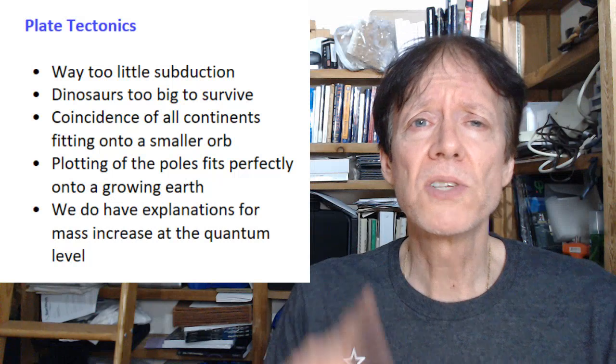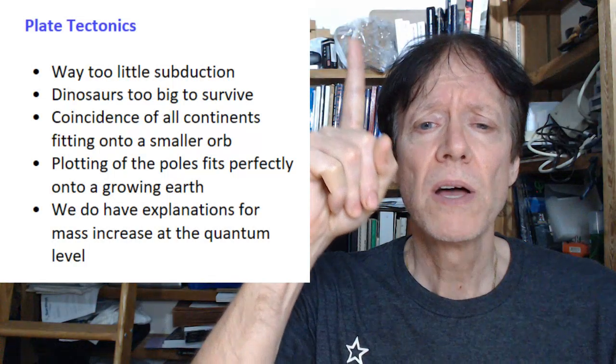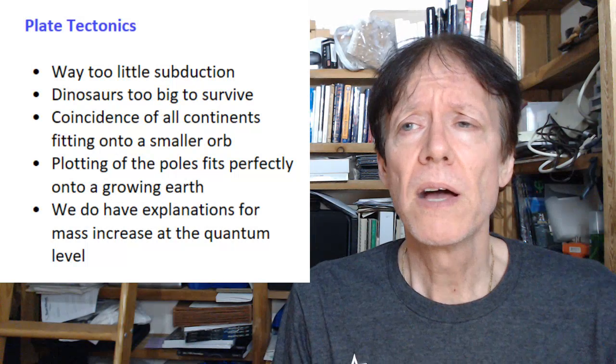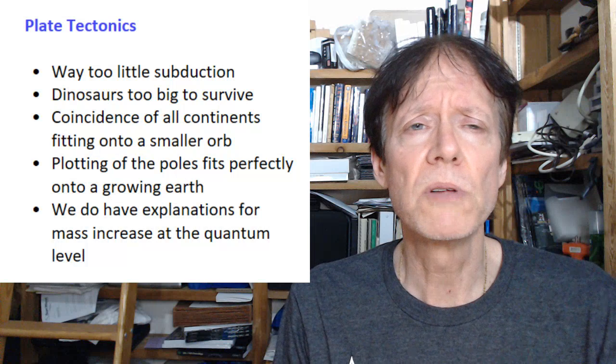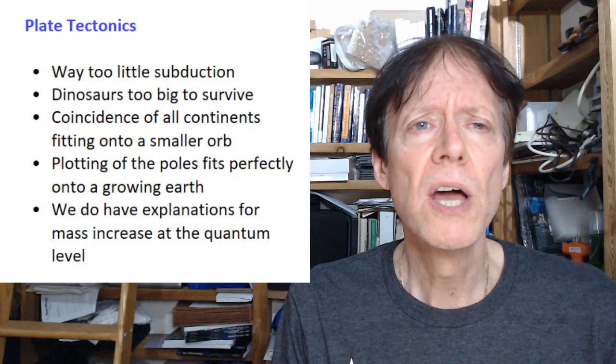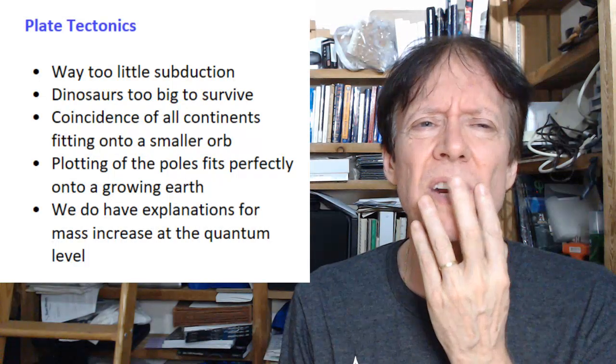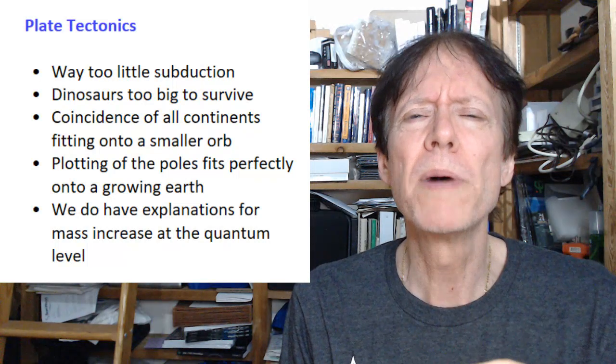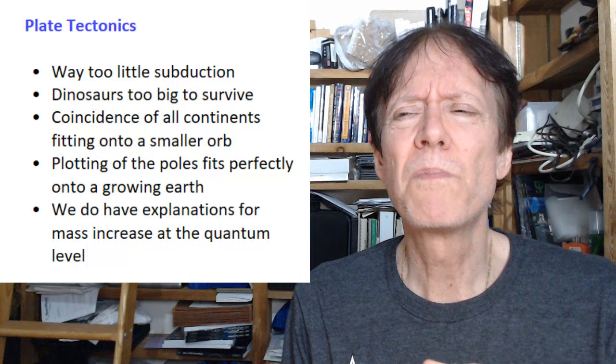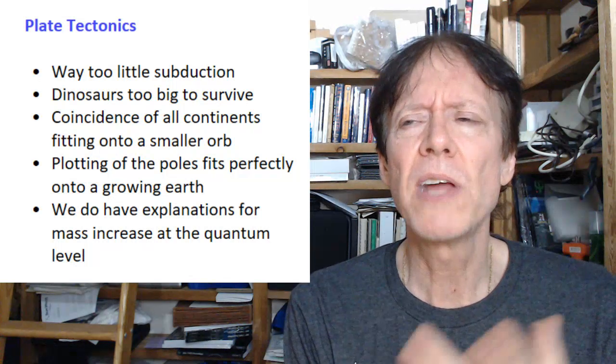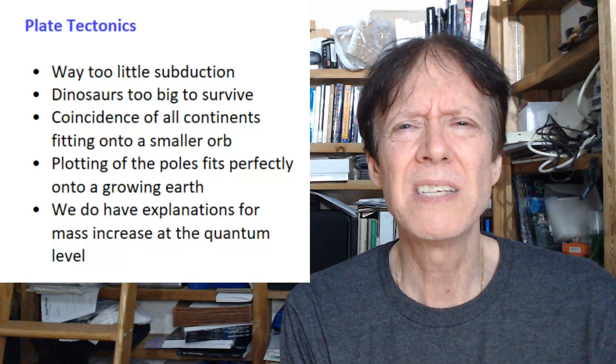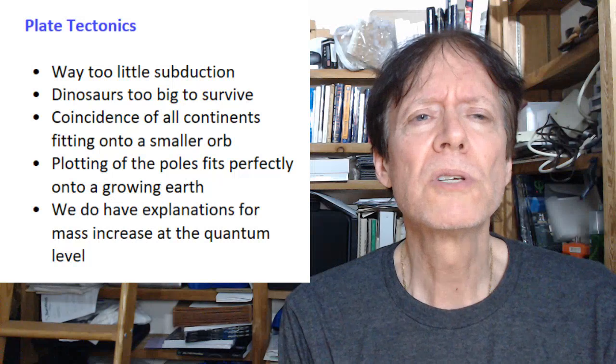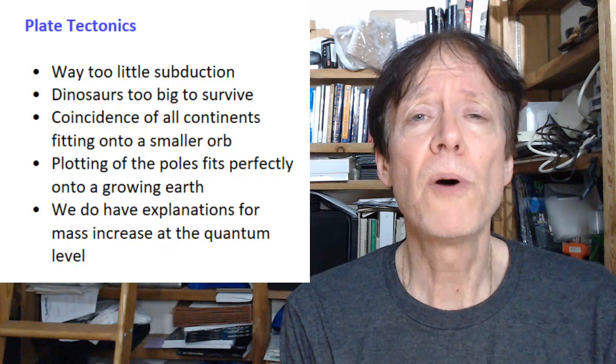Of course, then dinosaurs would be too big to survive. If you want to see that, there's a link right there—Dinosaurs Too Big to Survive. Stephen Hurrell wrote that book. It's on my recommendations on dissidentscience.com. And of course, it's a coincidence that all the continents fit together on a smaller orb. What are the odds of that? Somebody actually calculated that on Facebook and they came up with 96 quadrillion or something like that. Sounds about right.